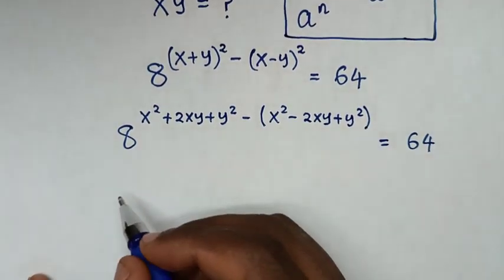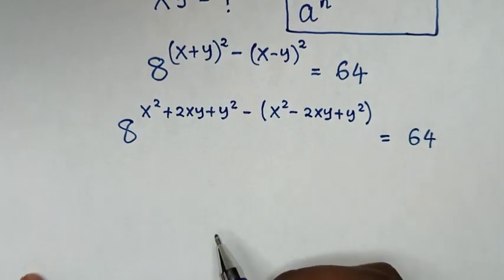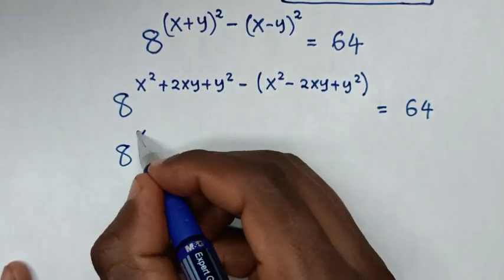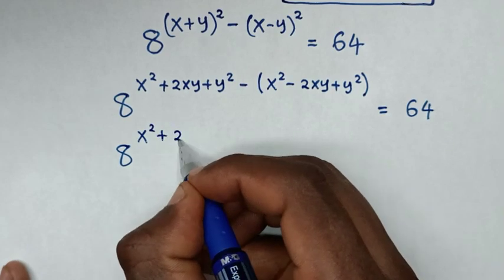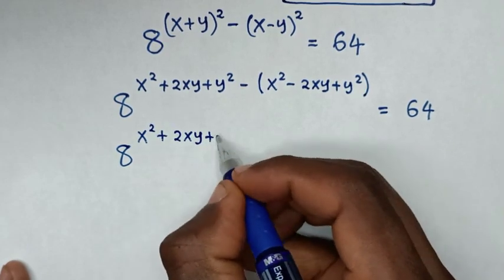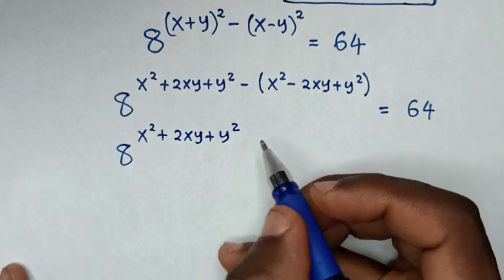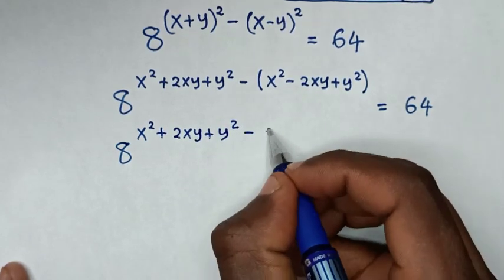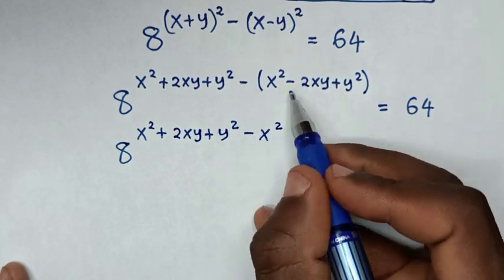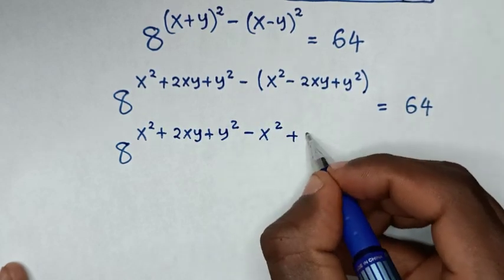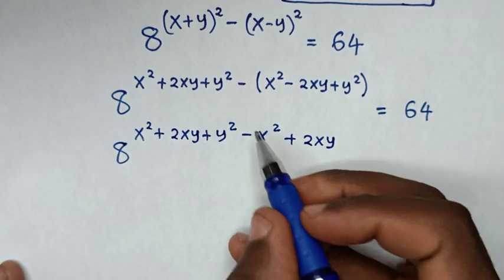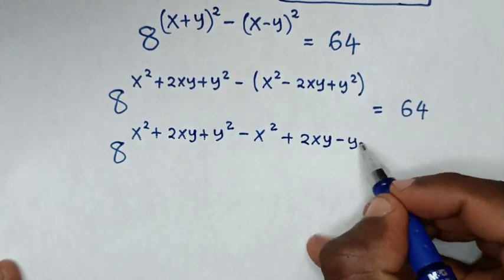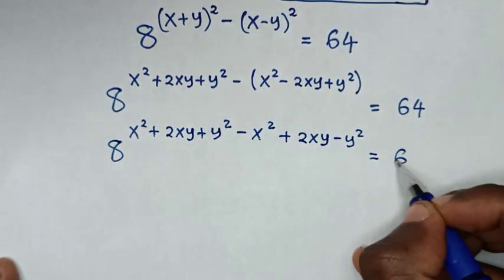Then in the next step we will open this bracket. So it will be 8 power of x² plus 2xy plus y². When we open the bracket: negative gives negative x², negative and negative gives positive 2xy, negative gives negative y², is equal to 64.